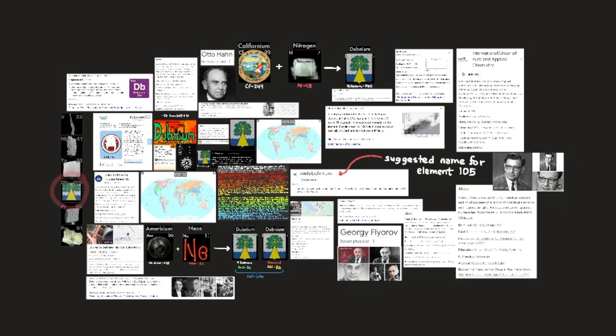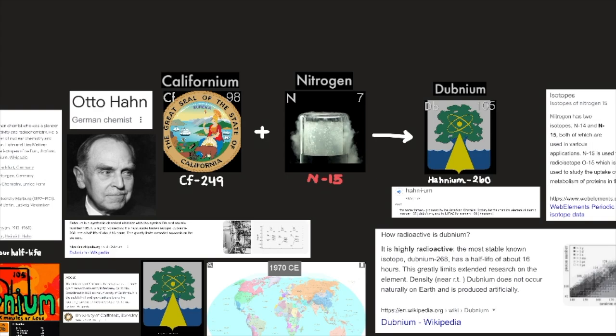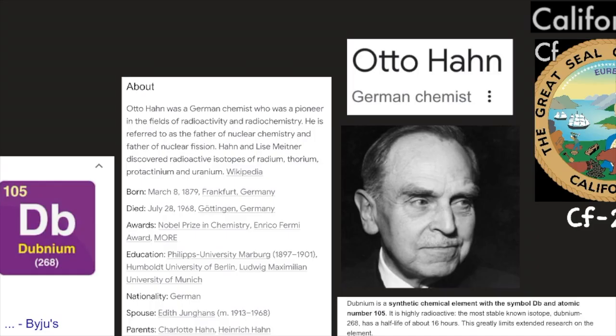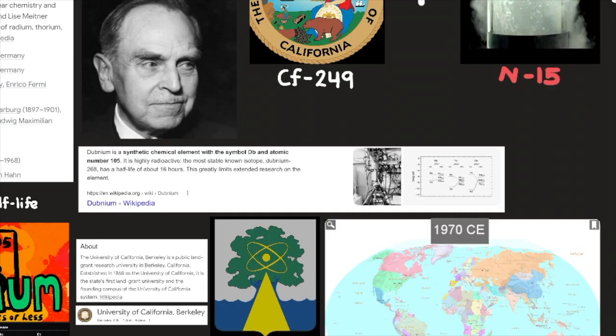After completing further experiments, the Soviet team proposed the name Neosborium. In 1970, a group of investigators at the Lawrence Radiation Laboratory of the University of California at Berkeley announced they had synthesized isotope 260, whereupon they proposed the name Hahnium for the element, in honor of Otto Hahn, the discoverer of nuclear fission. Otto Hahn was a German chemist and pioneer in radioactivity and radiochemistry, referred to as the father of nuclear chemistry. Hahn and Lise Meitner discovered radioactive isotopes of radium, thorium, protactinium, and uranium.